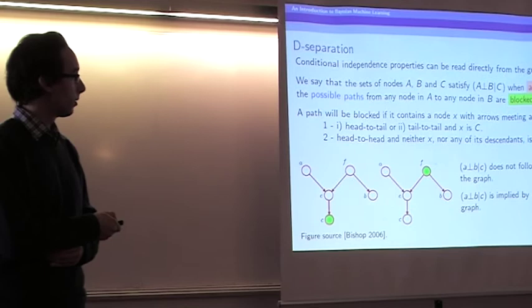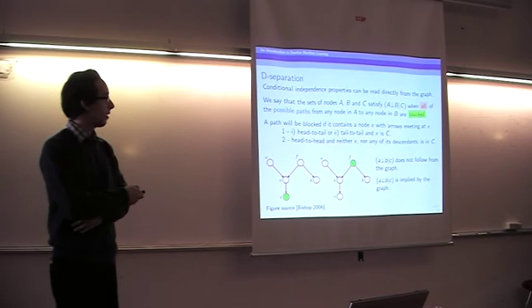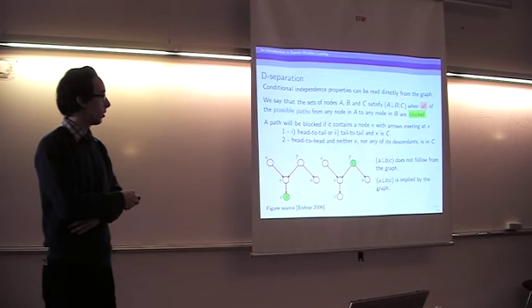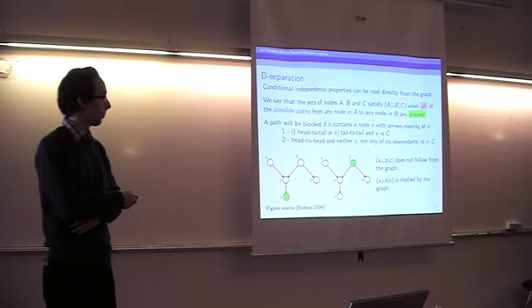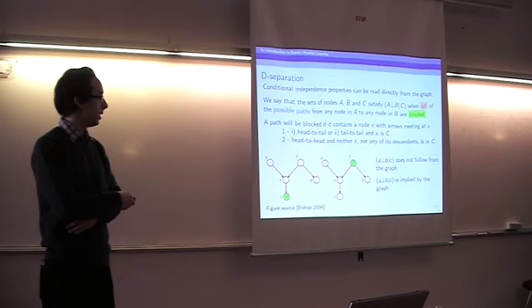A path will be blocked if one of two conditions holds: either there is a node in the path where the arrows meet head-to-tail or tail-to-tail, and that node is in the set C; or there is a node where the arrows meet head-to-head, and neither that node nor any of its descendants are in C.